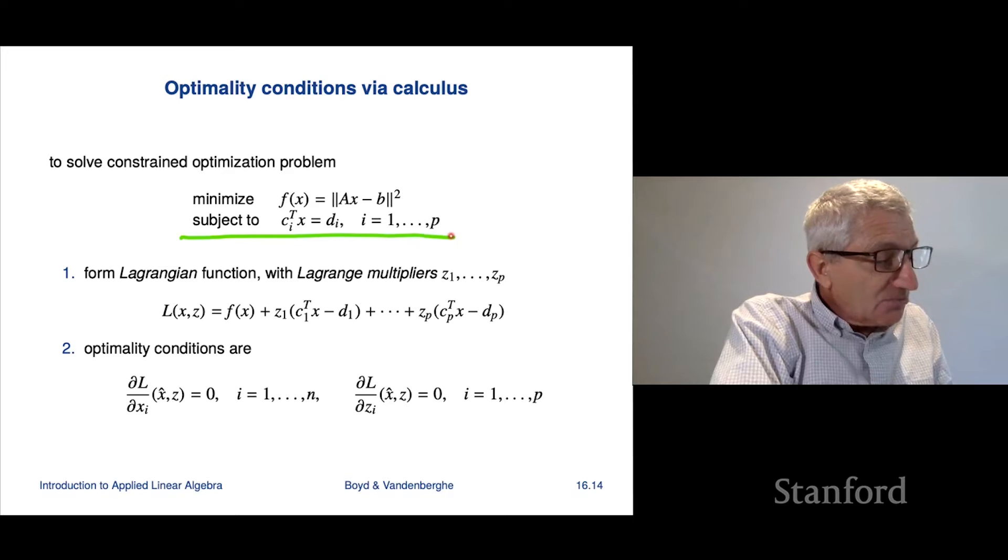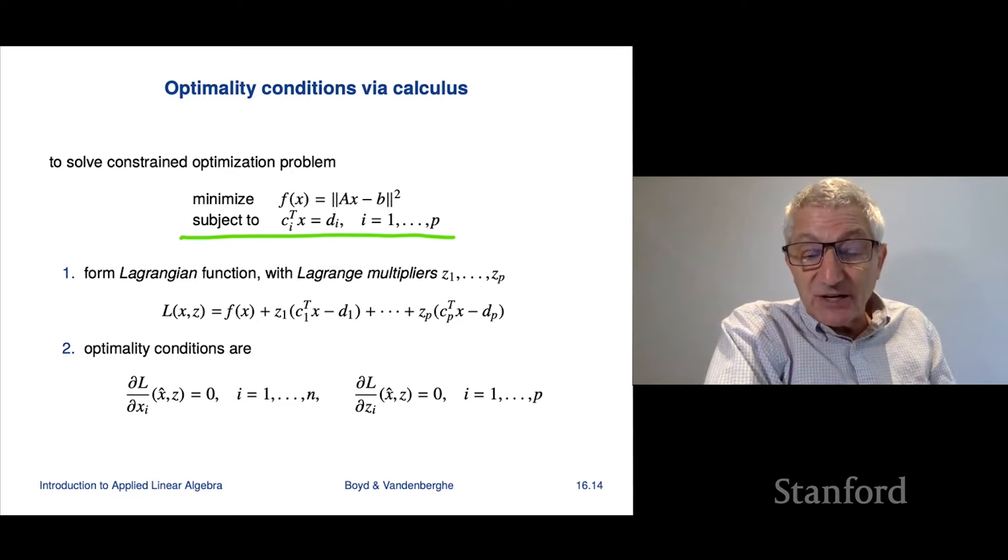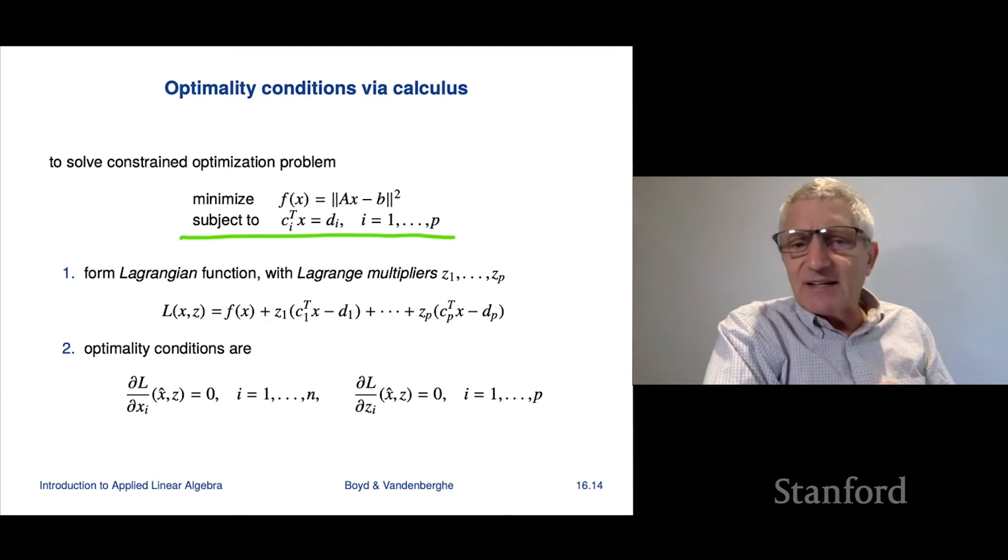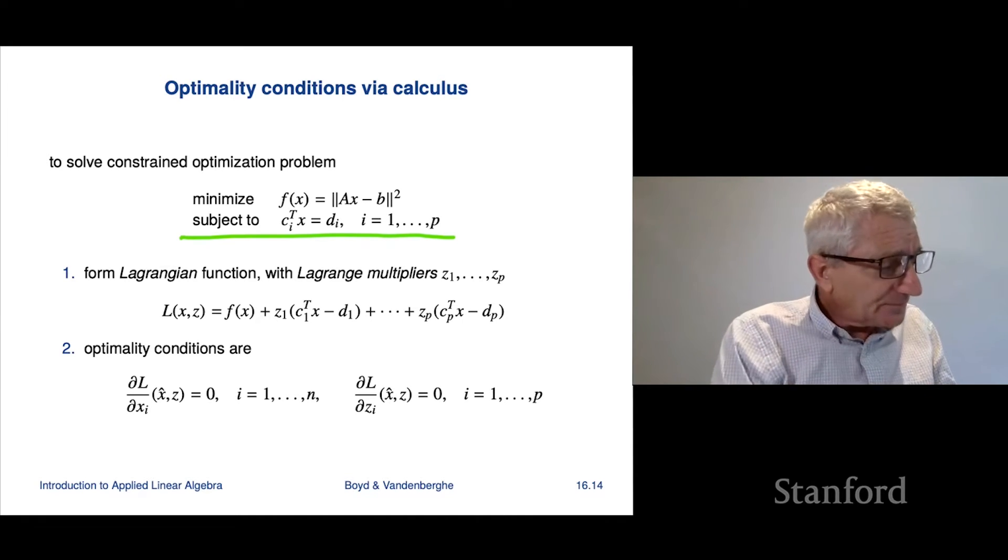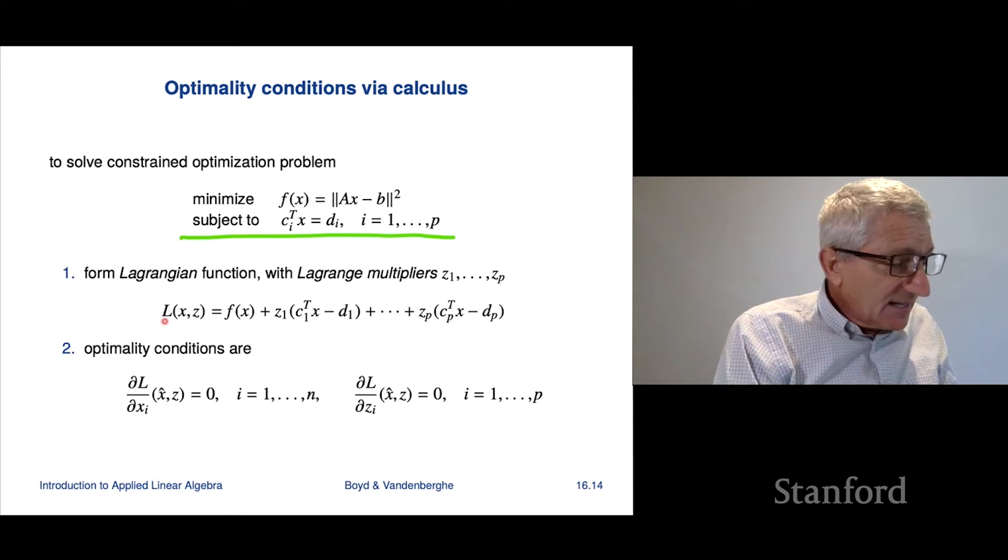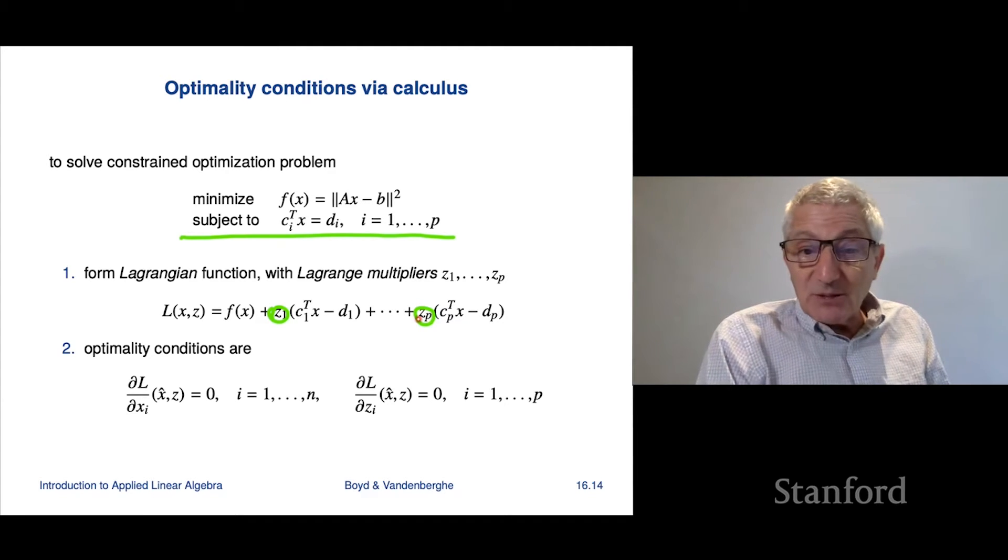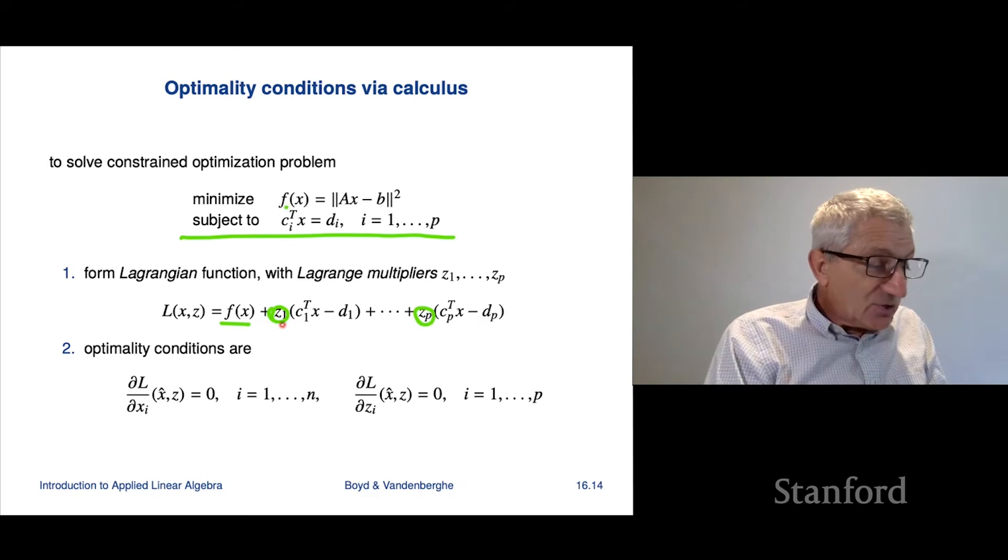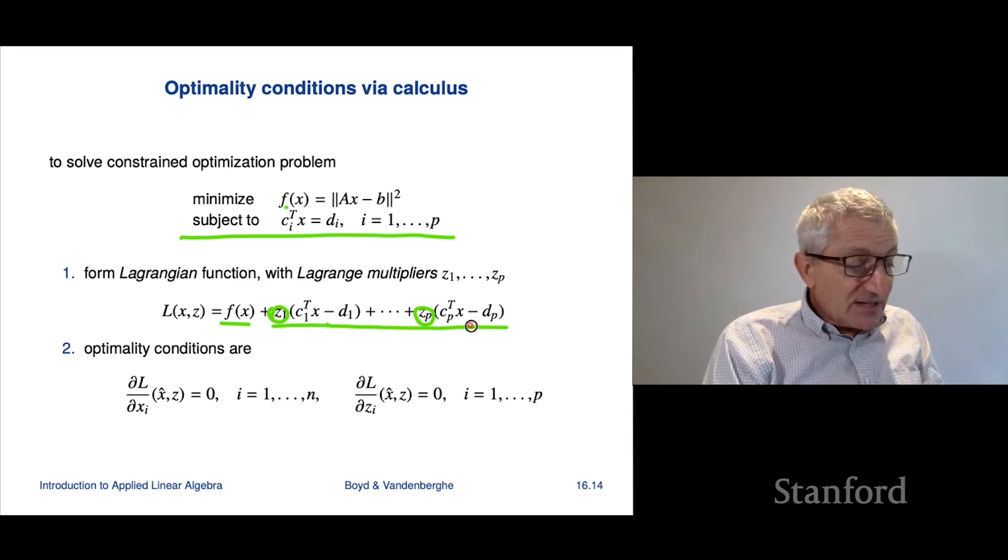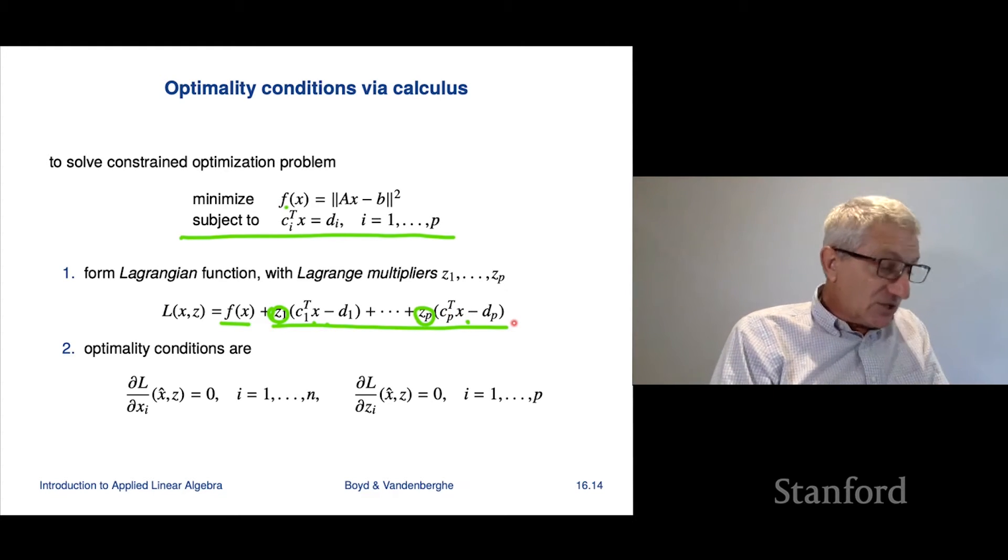What calculus says is something like this. It says if you want to solve this optimization problem here, then what you're going to do is you're going to produce something called the Lagrangian function. That's named after a famous mathematician named Lagrange. In fact, I think his name already came up once already in Lagrange polynomials for example. So what the Lagrangian is, is you introduce these numbers z1 up to zp. These are called Lagrange multipliers. And it says that you should take the objective function here and you should add the constraint residuals, these things, c1 transpose x minus d1 up to cp transpose x minus dp. And we multiply those by the Lagrange multipliers, and that's the Lagrangian.